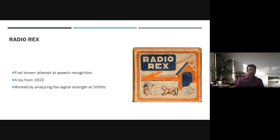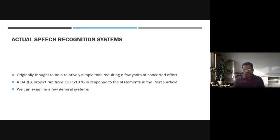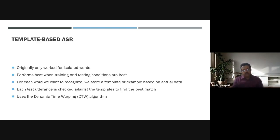Radio Rex, this toy from 1922, was the first attempt at speech recognition. Originally thought to be a relatively simple task, it turned out to be very complex. A DARPA project was initiated in response to work in this area, and a lot of research has been done from the 1970s onwards to analyze speech.